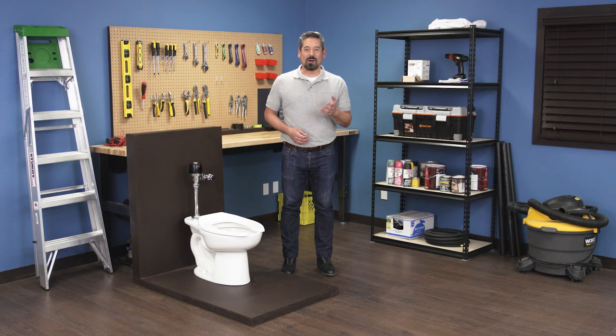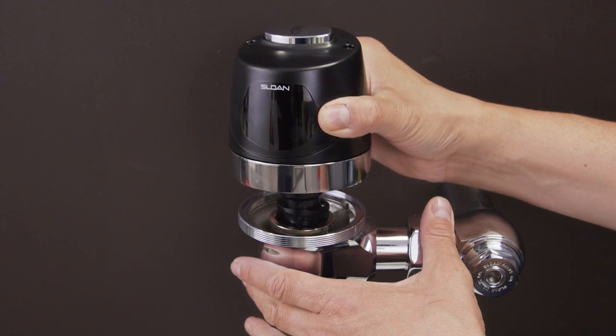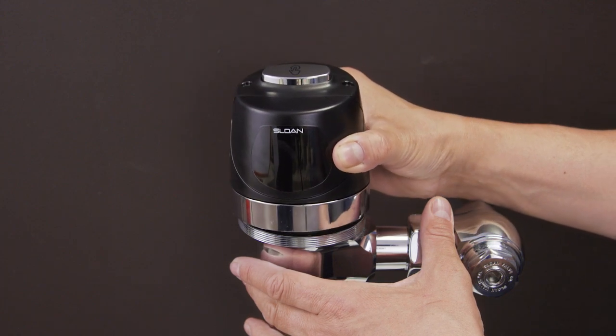Hi, I'm Vance, and welcome back to Repair and Replace. In this episode, I'll show you how to replace the flex tube diaphragm in a Sloan Optima, Solis, or Ecos flushometer. This applies to both urinals and water closets as the models are nearly identical, except for the spud diameter and size.